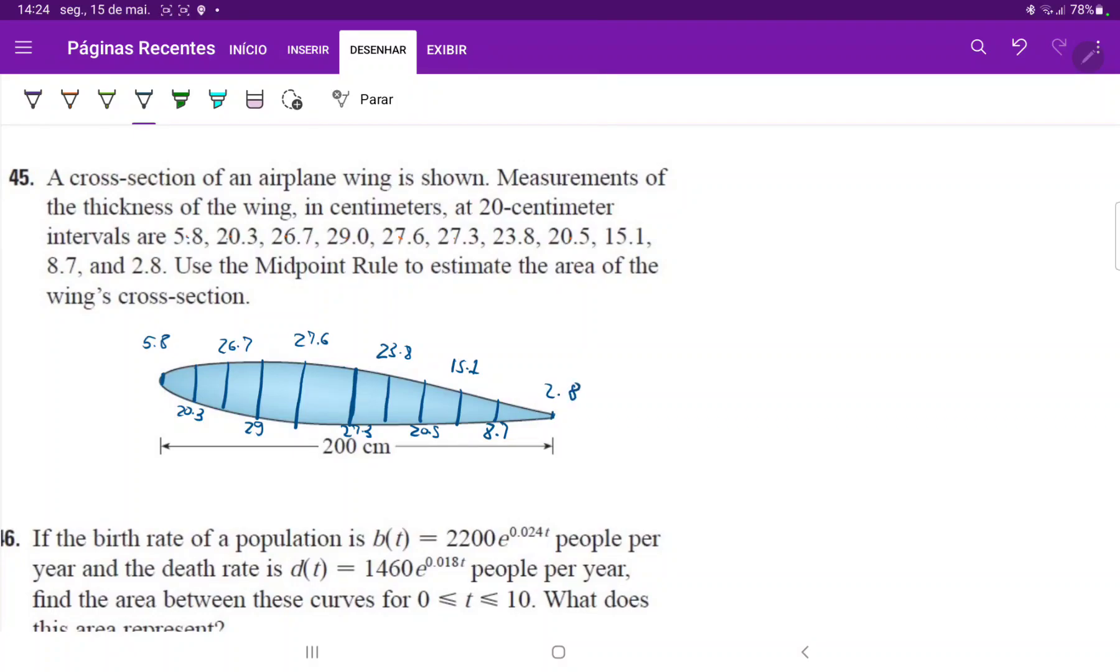So they do want us to use the midpoint rule to estimate the area of the wing's cross section. So to use the midpoint rule is we're going to consider taking points in the middle of two sections. So this would be in the middle of two sections, this one would be two, and then kind of just drawing rectangles. So let us draw these rectangles.